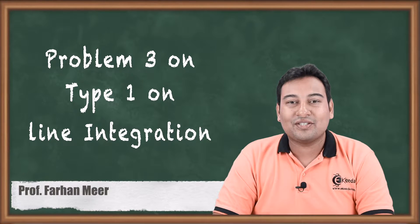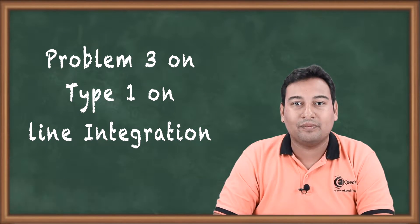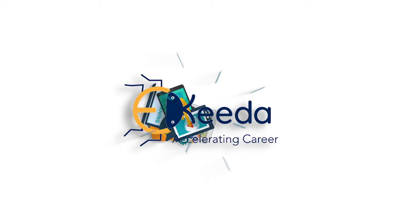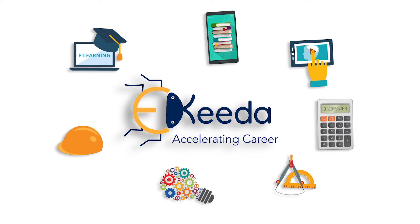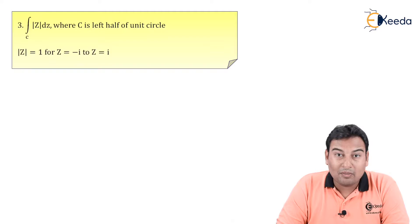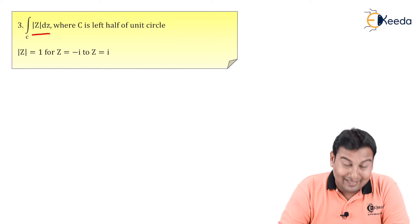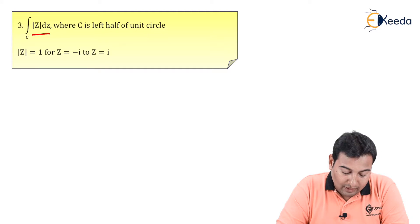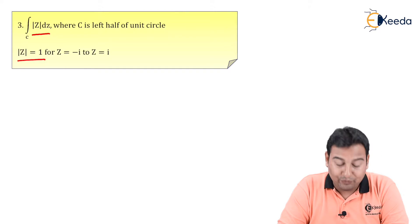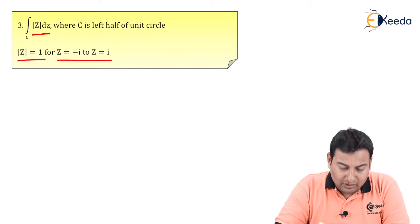Hello friends, in this video we'll discuss one more example on line integration type 1, closed curve, and this will be our third problem. The problem given is: integration over C of |z| dz, where C is the left half of the unit circle |z|=1, from z = -i to z = i.